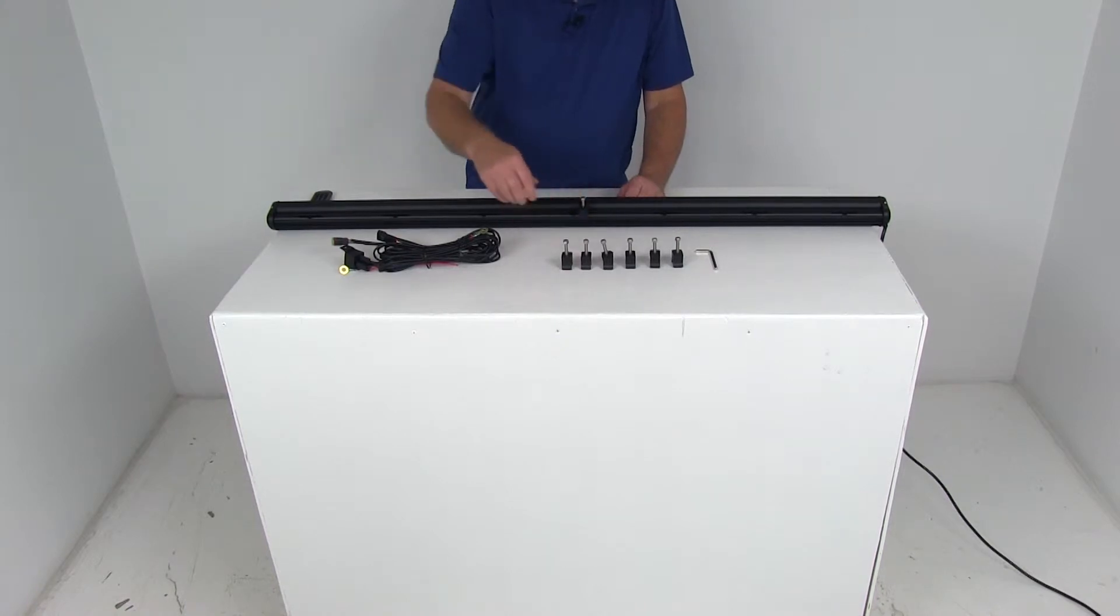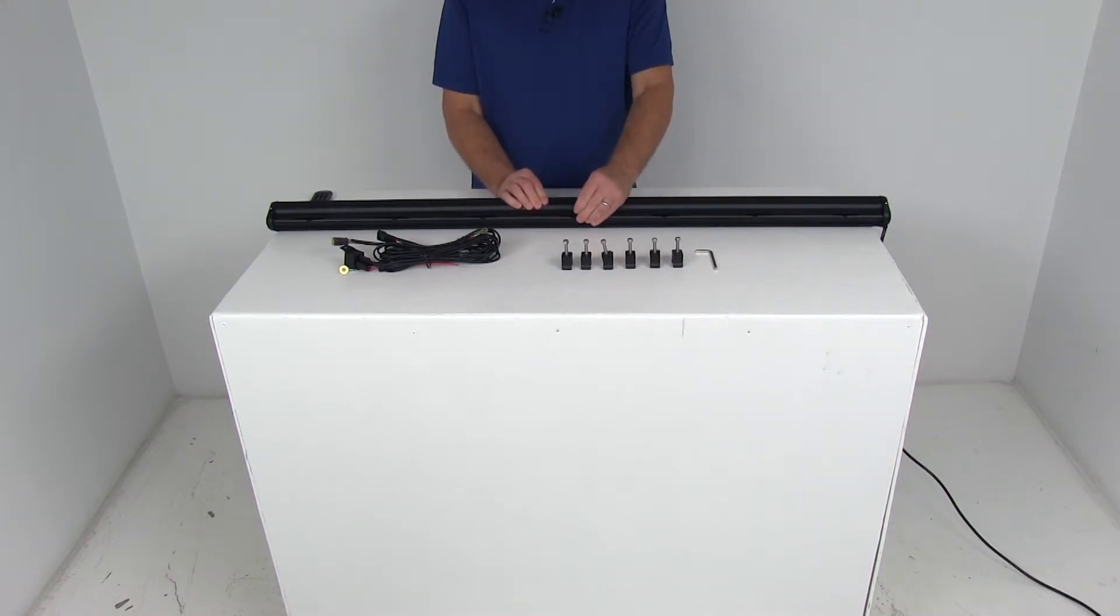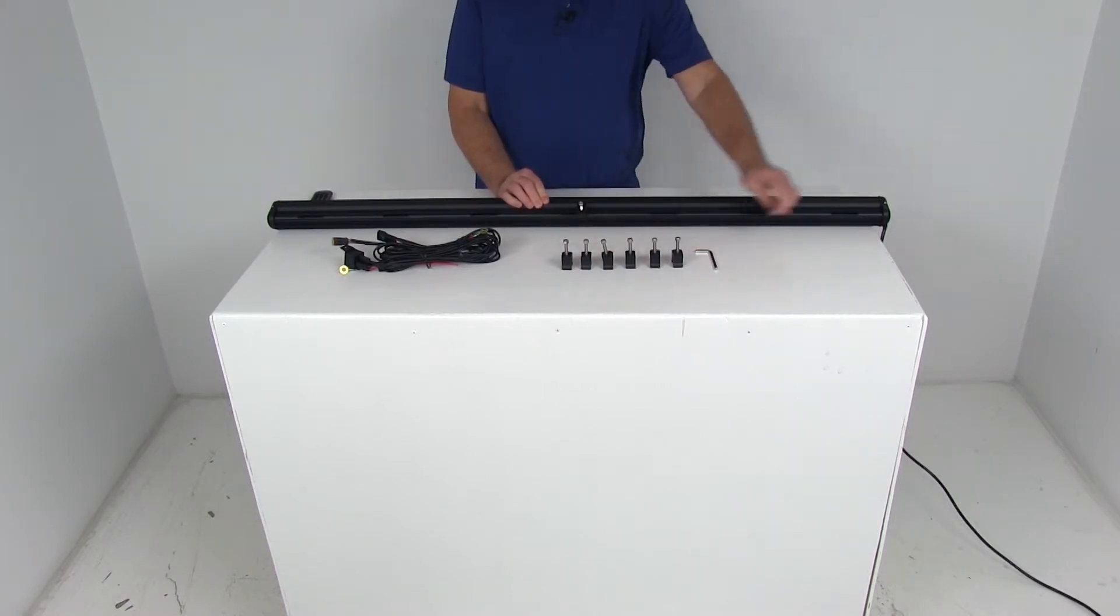Do that all the way down, and then you tighten them down, and then once they're all in there, you can rotate this light bar. You can see it will rotate up to 15 degrees of adjustment. And then once you get it to a spot where you don't want it to move, you can use that Allen wrench and tighten the Allen bolts down on each end.